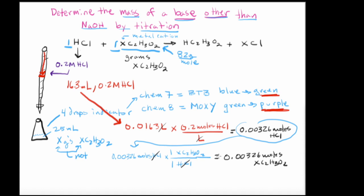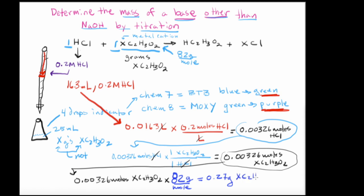Now, to get to the mass of this compound, we just have one step left. So I'm going to move my moles down here. It's going to be 0.00326 moles of XC2H3O2. And then this will be times the molar mass, which I diagrammed above. And this will be equal to 82 grams per mole. And when we multiply this out, we're going to get 0.27 grams of XC2H3O2.